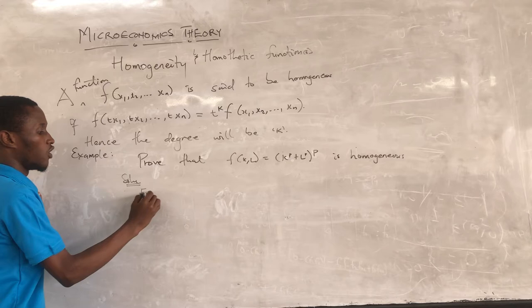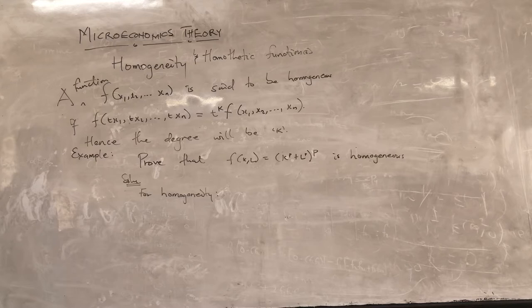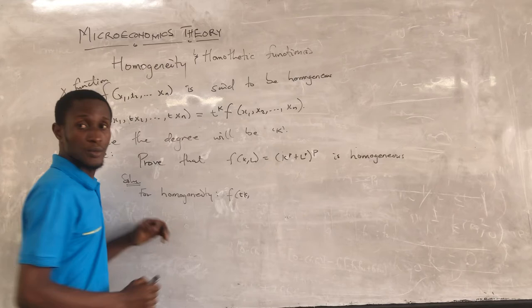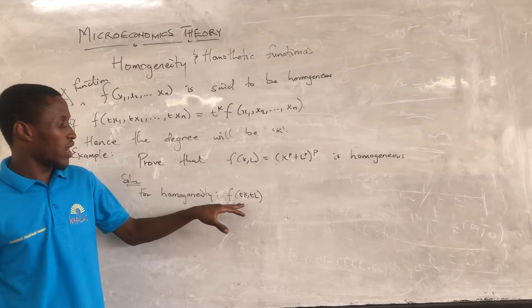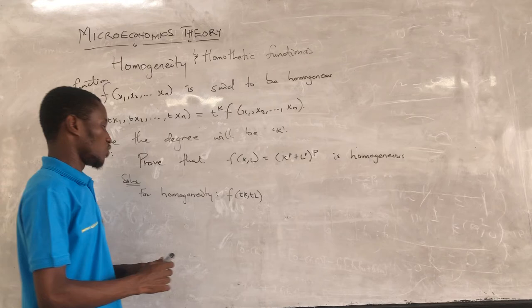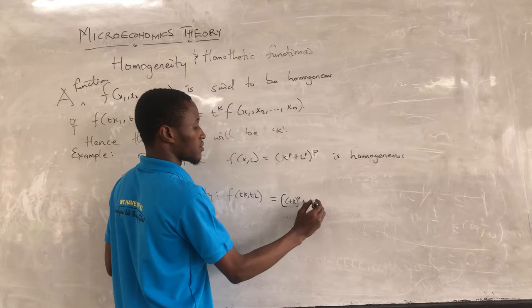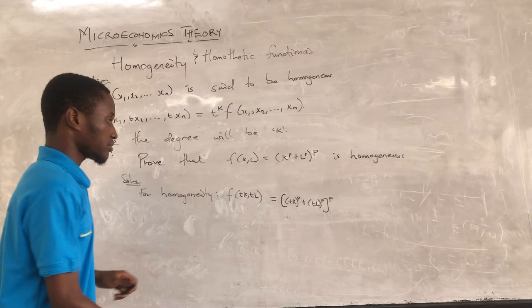For the solution, we know that for homogeneity we introduce a scalar to the variables. So we have F(tK, tL). Wherever we see K we put tK, and wherever we see L we put tL. So F(tK, tL) gives us (tK)^p + (tL)^p, all raised to the exponent 1/p. Expanding, we get (t^p · K^p + t^p · L^p)^(1/p), and we can factor out t^p.